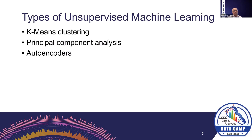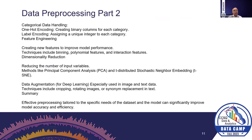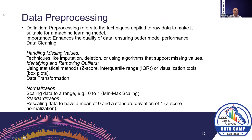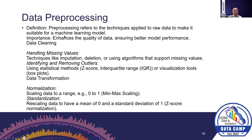PCA is a popular method for reducing dimensionality. There are also autoencoders — a type of deep neural network commonly used for anomaly detection with a specific architecture. They can also be used for reducing dimensionality. Data preprocessing is the most important step in machine learning.